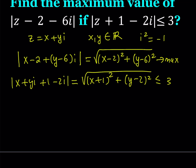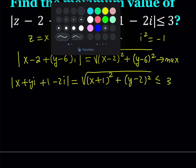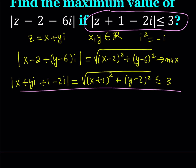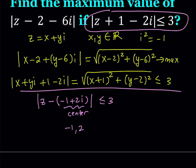Having said this, let's solve this using analytical geometry. We do have a circle here. Based on the given condition, we can write it as z minus (negative 1 plus 2i), so this represents the center of the circle. We have a circle whose center is at (negative 1, 2) and its radius is 3.